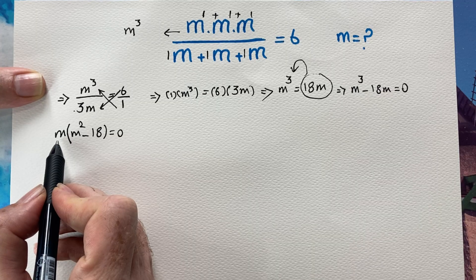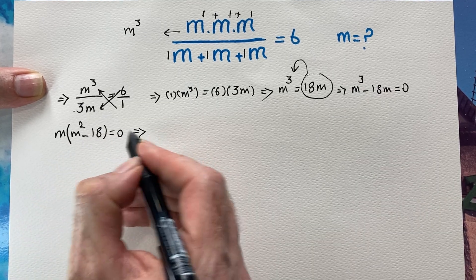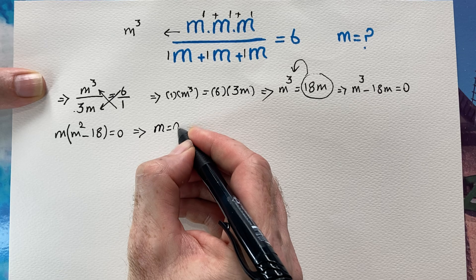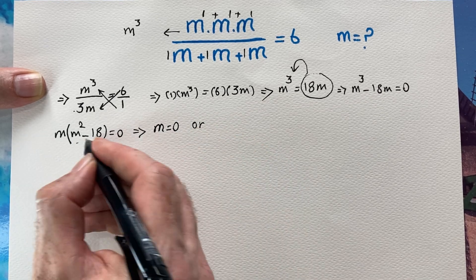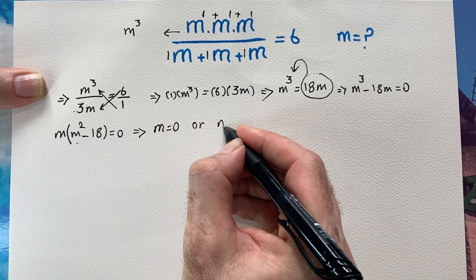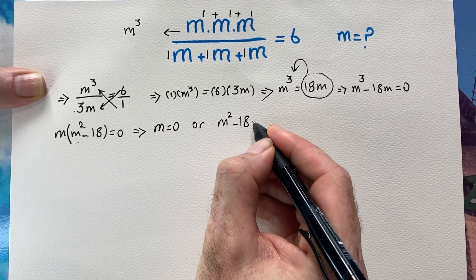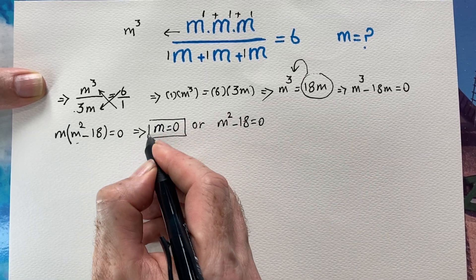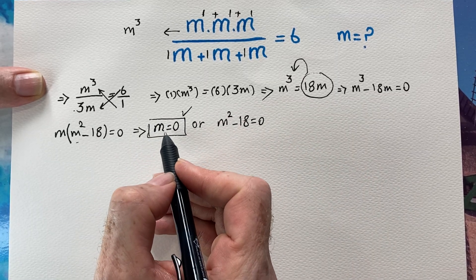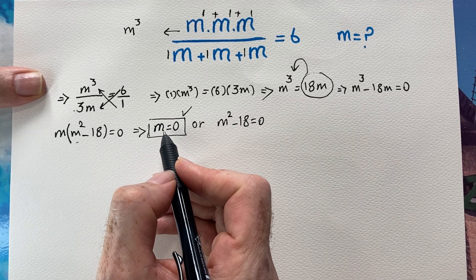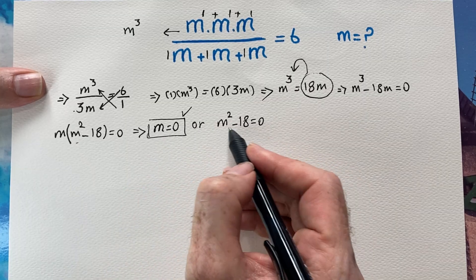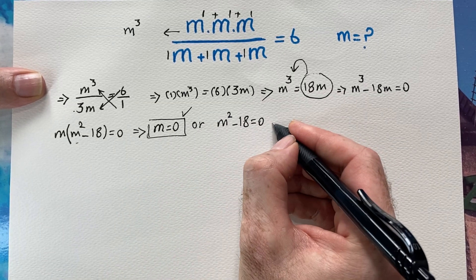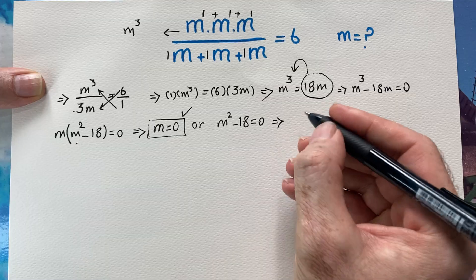What do we have here? If the product of two factors is zero, at least one of them must be zero. So either m equals zero, or m squared minus 18 equals zero. I need to check whether each of these gives a valid answer.